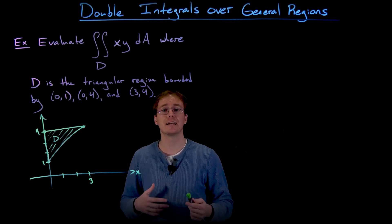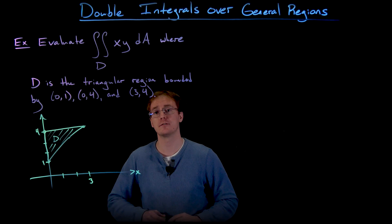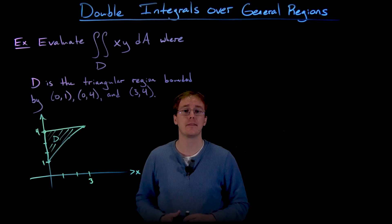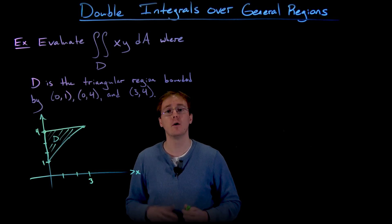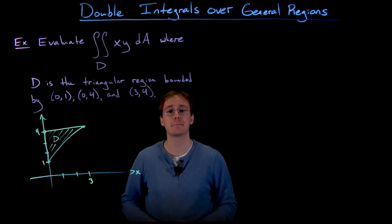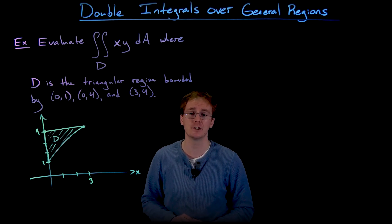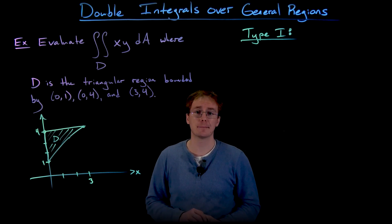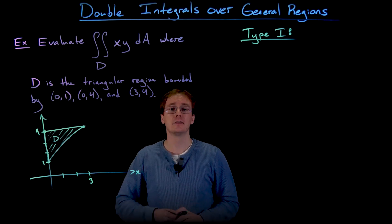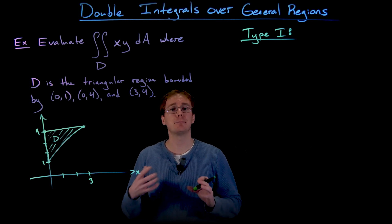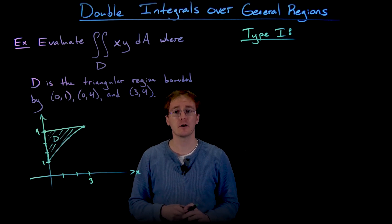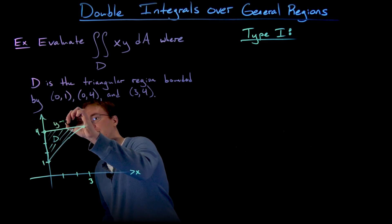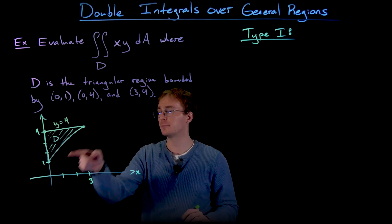We can express this double integral using either order of integration — first with respect to x and then y, or first with respect to y and then with respect to x. Let's do this example both ways: first treating it as a type 1 region, then as a type 2 region, and confirm we get the same answer. For a type 1 region, we describe D as bounded by a curve on top and a curve on bottom between some interval of x values. Our curve on top is y equals 4.